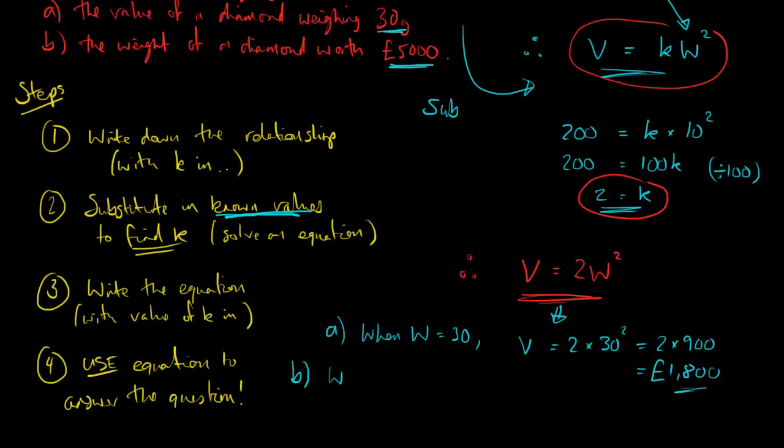So now we know v, we know the value. So when v is equal to 5,000, again I'm just going to put that into the formula we've got above. v equals 2w squared. So in this case 5,000 is equal to 2w squared.